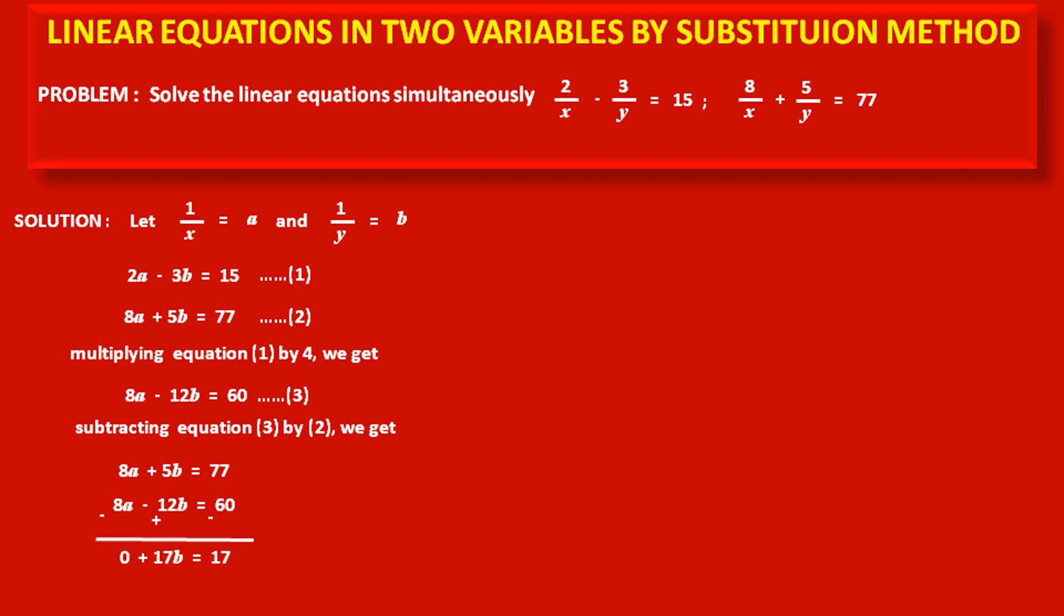8a - 8a = 0, and 5b - (-12b) = 5b + 12b = 17b. On the right side, 77 - 60 = 17.